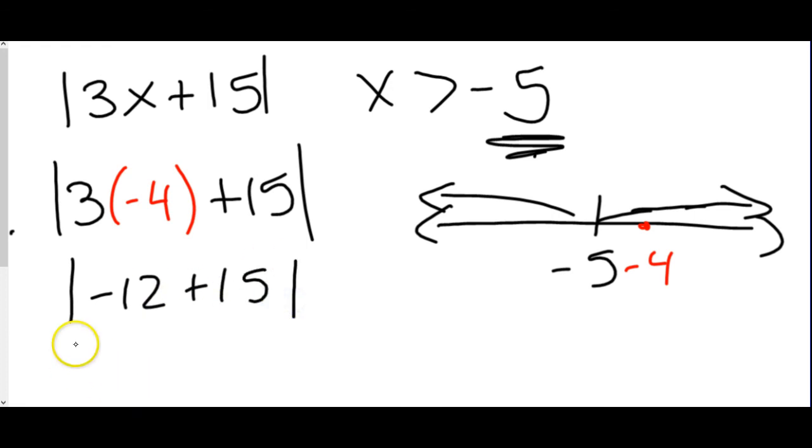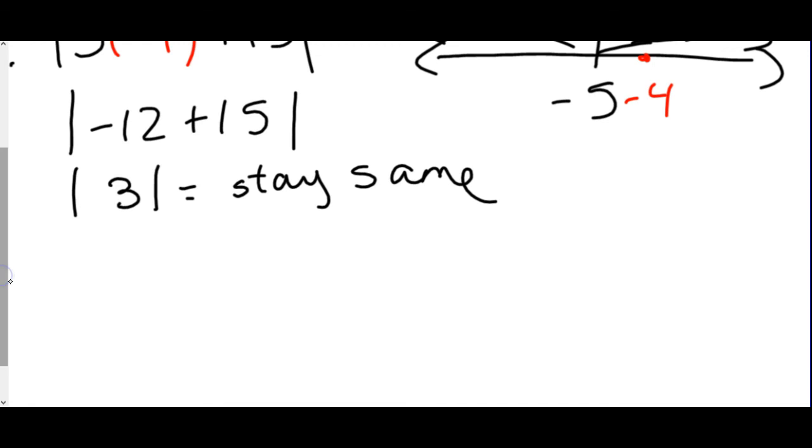So we multiply 3 times negative 4 is negative 12. Negative 12 plus 15 is positive 3. So now we look at this positive 3 and say, would I change it or would I leave it as it is? Well, this one, I would leave it. This would stay the same. I don't change anything. Well, for that number, that means the expression is going to follow that same pattern.